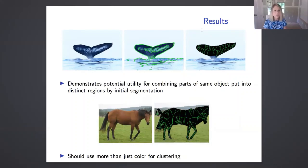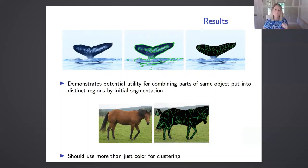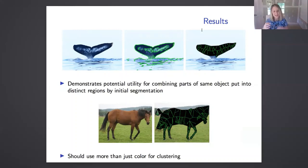On the one hand, this is good — we're demonstrating potential utility for combining parts of the same object that were put into distinct regions by the initial segmentation, like this whale tail with non-uniform coloring in the interior. But then for the horse, we get an over-segmentation because we have Voronoi points in the background belonging to trees that were assigned to the same cluster as the horse's body based on color value. If we were to go back and do more with this, we'd want to use more than just color — things like texture or statistical moments within Voronoi cells.